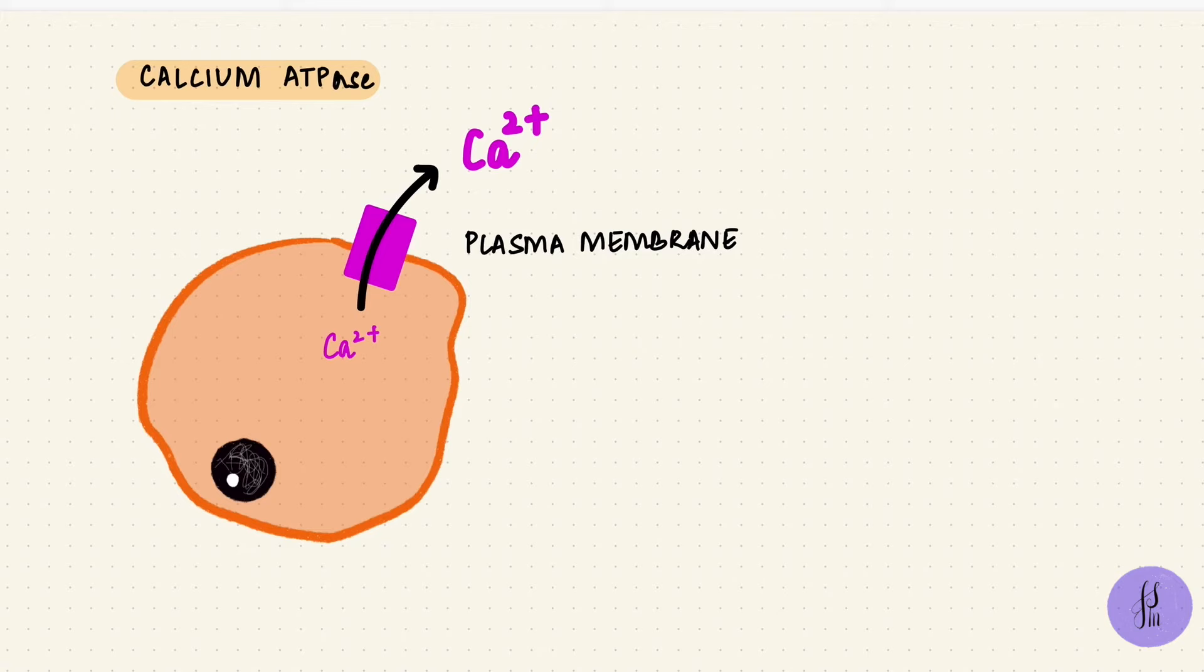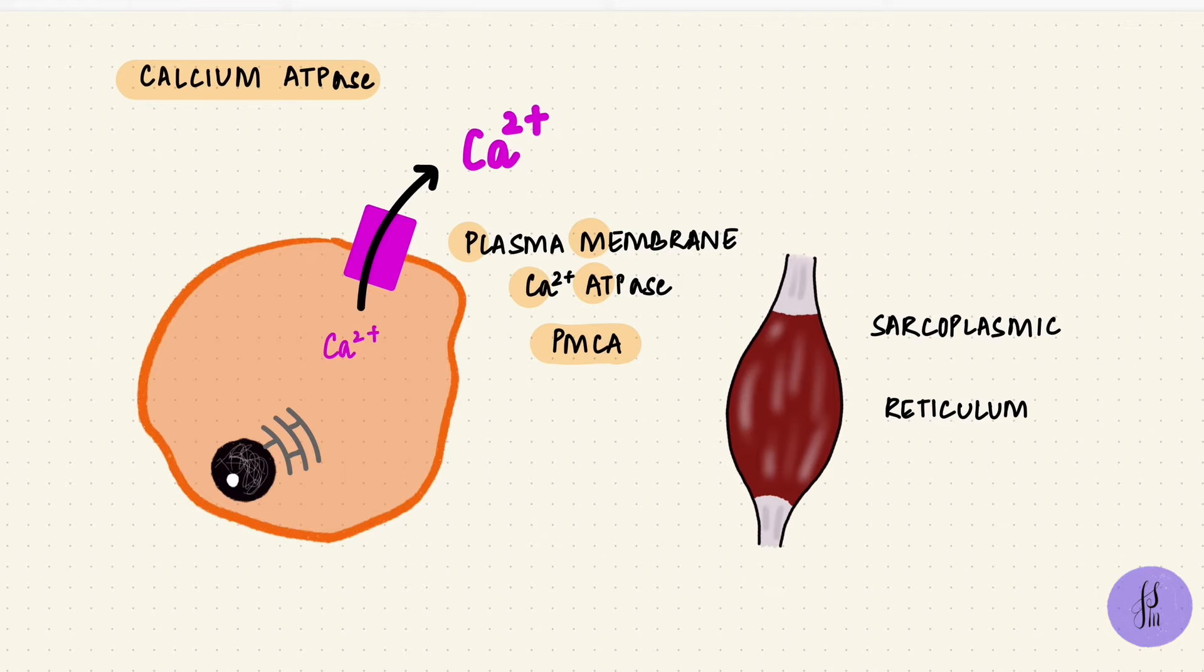There are also pumps that push calcium into the endoplasmic reticulum, which in the case of muscle is the sarcoplasmic reticulum. It's the sarcoplasmic endoplasmic reticulum calcium ATPase, SERCA. So calcium gets stored in the sarcoplasmic reticulum, and that's important for muscle relaxation. So by pushing calcium out of the cell or into the sarcoplasmic or endoplasmic reticulum, the cytoplasmic calcium stays low.